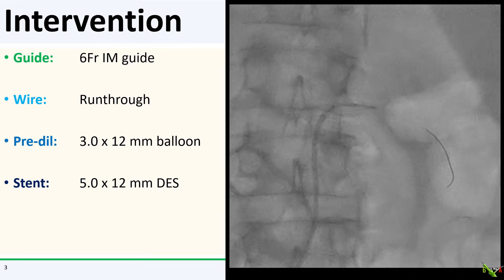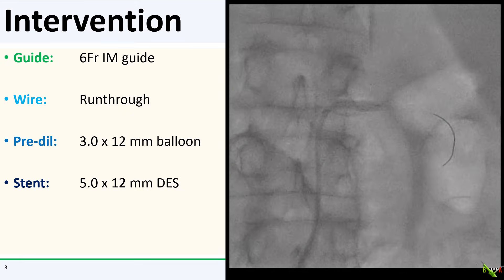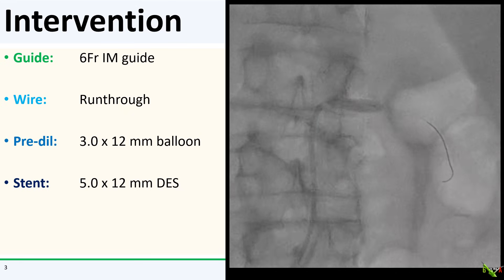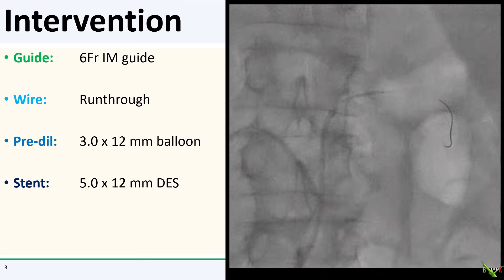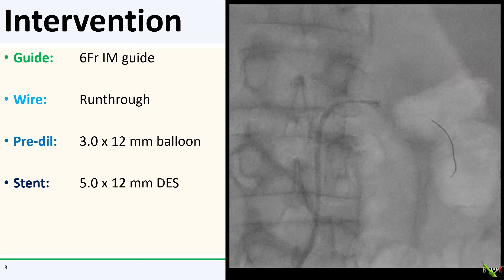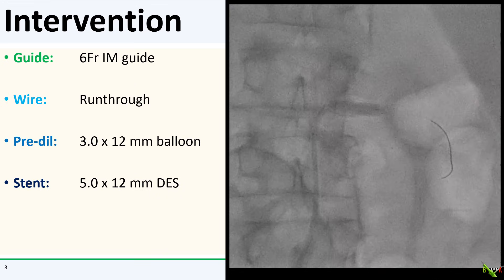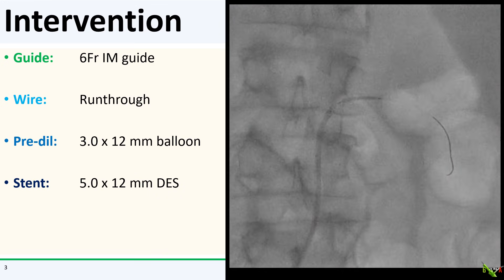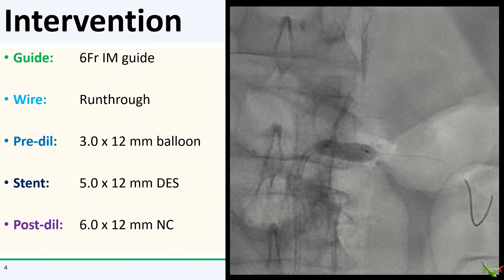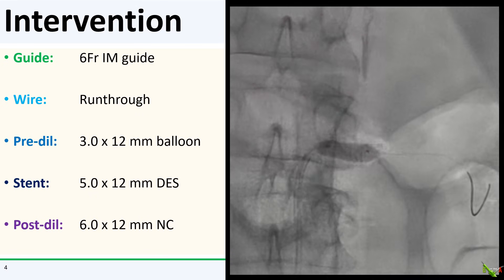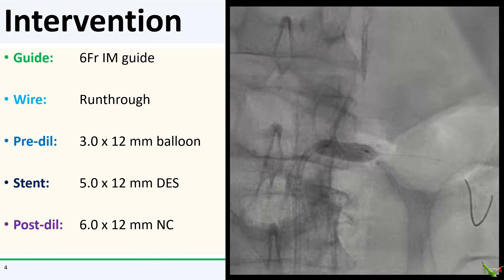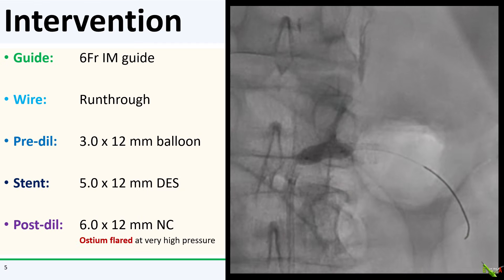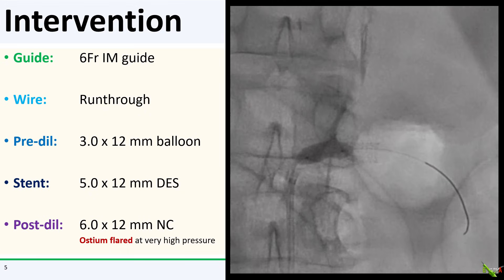The left renal artery was engaged with a 6 French IM guide. The lesion was easily wired with a run-through wire, pre-dilated with a 3.0 by 12 balloon, and stented with a 5.0 by 12 drug-eluting stent, which seemed to expand well. Here is the post-dilation with a 6.0 by 12 non-compliant balloon. The ostium was flared with the same 6.0 balloon at very high pressure, and things seem to be expanding well.